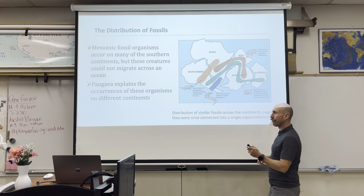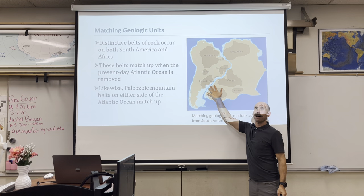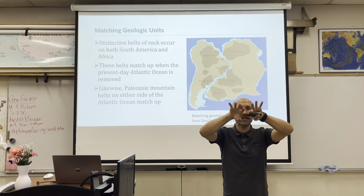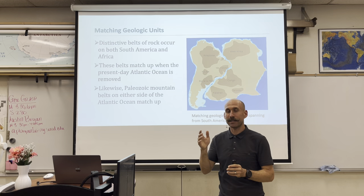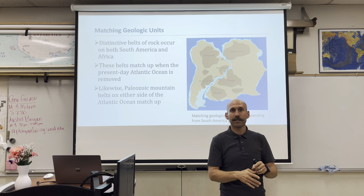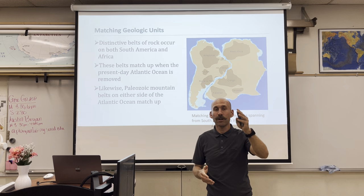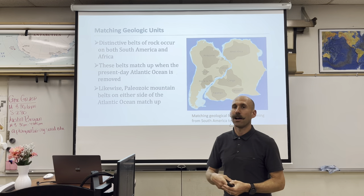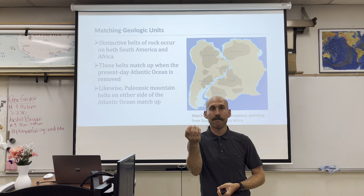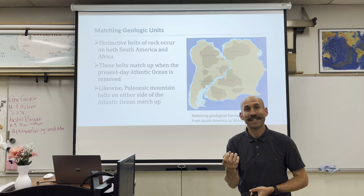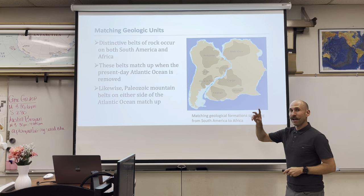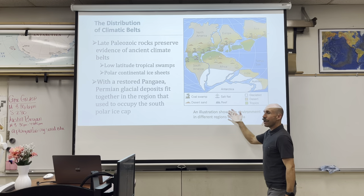Line of evidence number three: matching geologic units on opposing continents. Africa and South America have geologically similar rock units, and Scandinavia, Northern Europe, and the East Coast of the United States have geologically similar rock units. According to Steno's principles of stratigraphy, rocks of the same mineralogical content must have been deposited at the same time in the same place. To have the same rocks on opposite sides of the ocean is very curious.